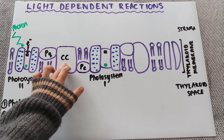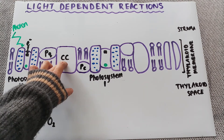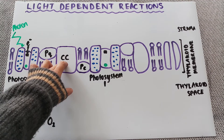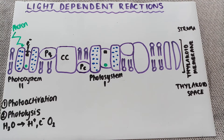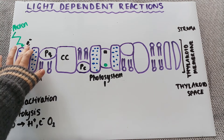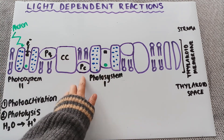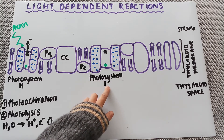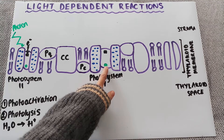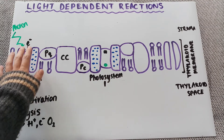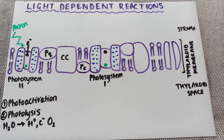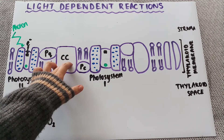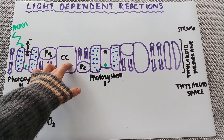The cytochrome complex is important because it is going to be pumping protons into the thylakoid space — very similar to what we've seen before in respiration in that electron transport chain. The excited electron is passed from each of these carriers until it gets to the final acceptor and is transferred to photosystem 1, where it is accepted by chlorophyll A. During this process, the electron moves down and as it goes it is releasing energy.